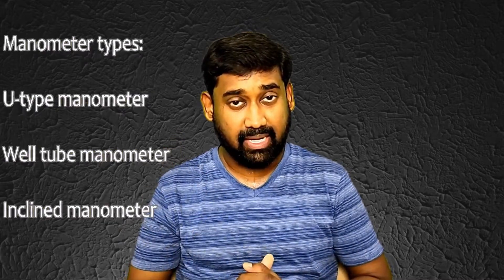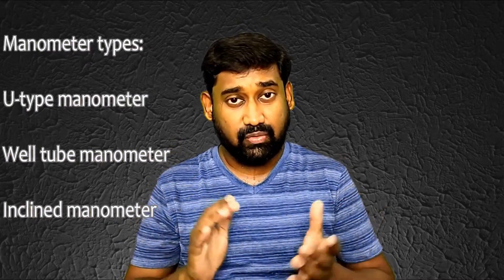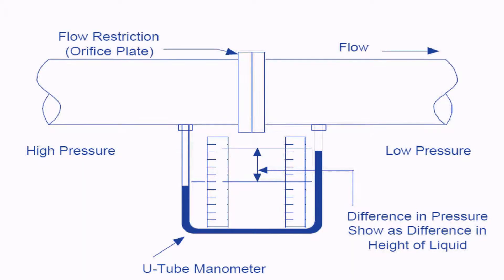We have different types of manometers: U-type manometers, well tube, and inclined manometers. For example, you can see in this figure — there is a pipe with an orifice plate, which is a restriction. In the upstream of the orifice plate we have high pressure; on the downstream we have low pressure. Between the high and low pressure we have tappings connected to a U-tube manometer. Due to the high pressure in the HP leg, pressure is exerted on the liquid, pushing it to the LP side. You can see the difference in the liquid head between them, and this is the differential pressure — this is how a U-tube manometer works.